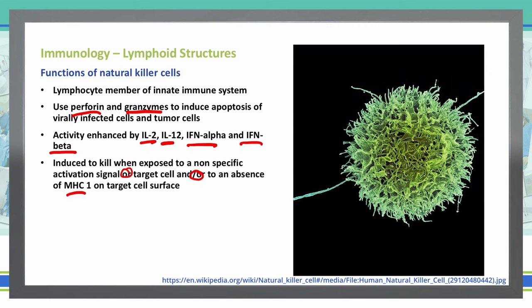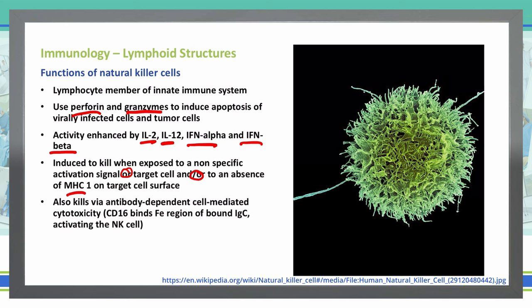Natural killer cells can also kill via antibody-dependent cell-mediated cytotoxicity. In this case, CD16 bonds to the Fc region of a bound IgG, which will activate the natural killer cell.